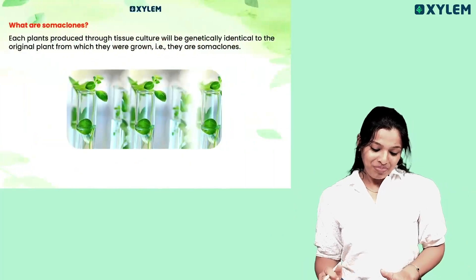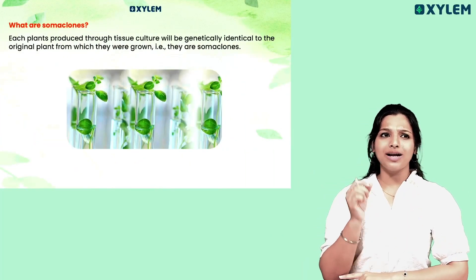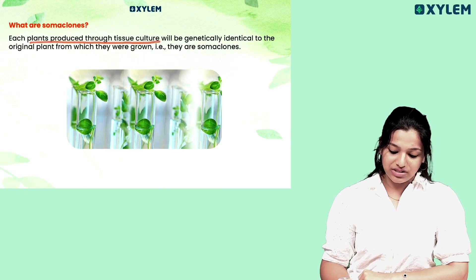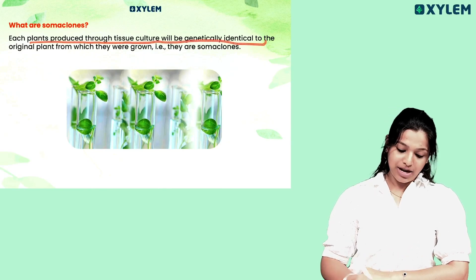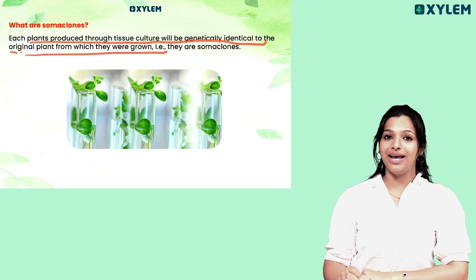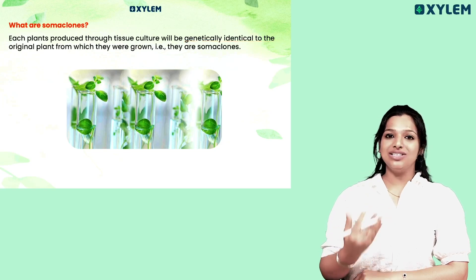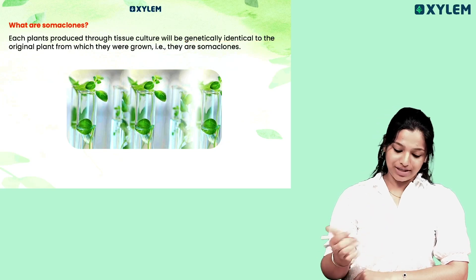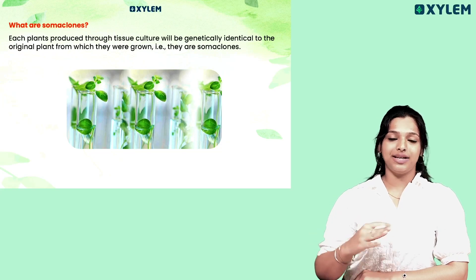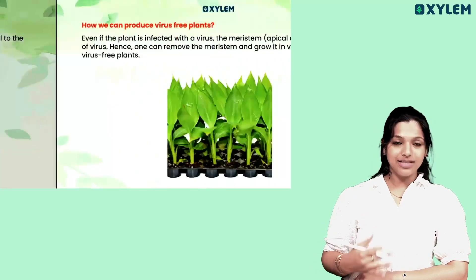What are soma clones? Each plant produced through tissue culture will be genetically identical to the original plant from which they were grown — genetically identical to the culture, exactly similar to the parent. That is soma clones.